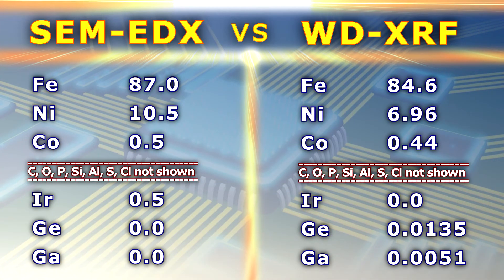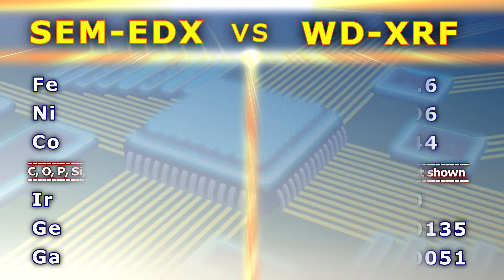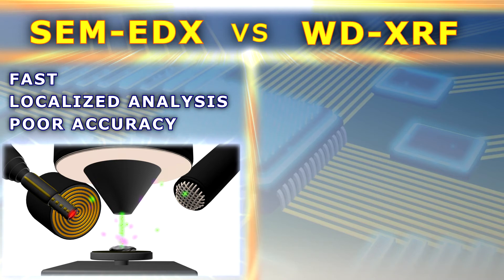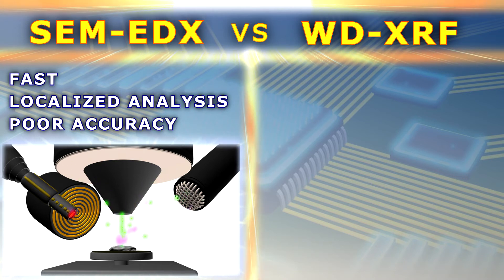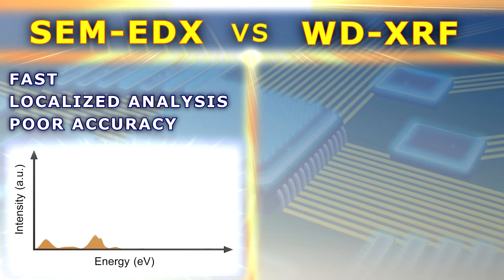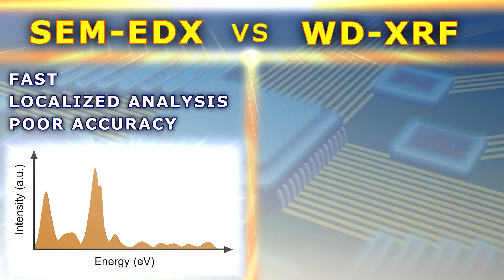The reason why the two methods gave slightly different results can be explained as follows. Energy dispersive X-ray microanalysis with the scanning electron microscope is ideal for fast localized analysis in a microscopic scale, even for mapping the distribution of elements. However, since the peaks are broad and often overlap, the measurement of low quantities is problematic.